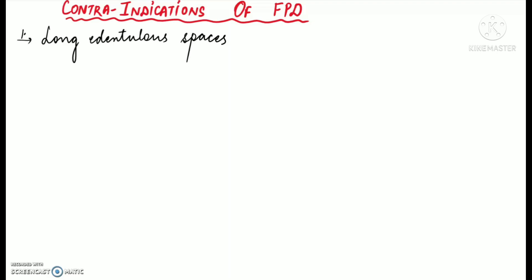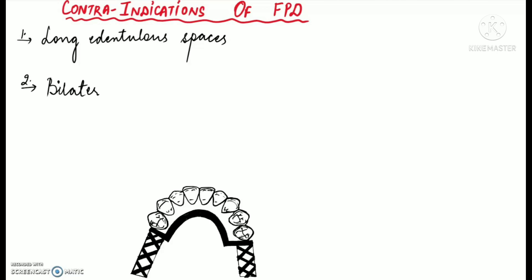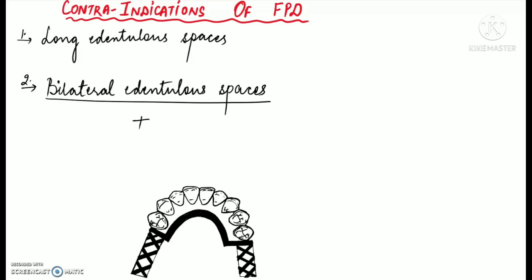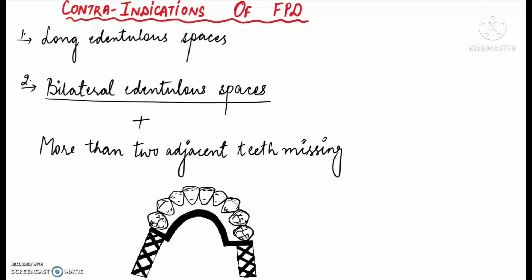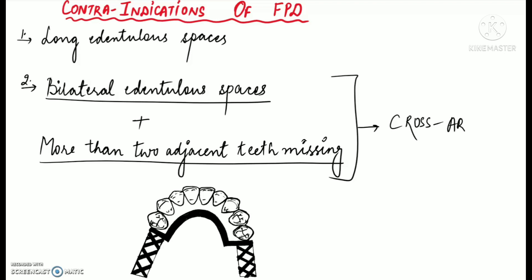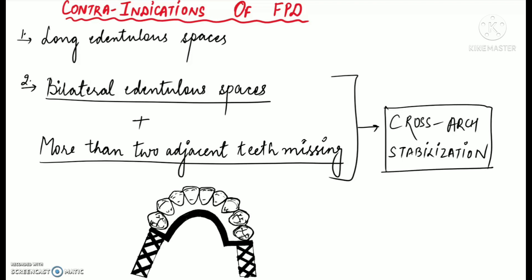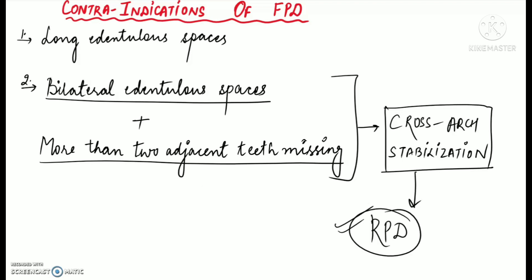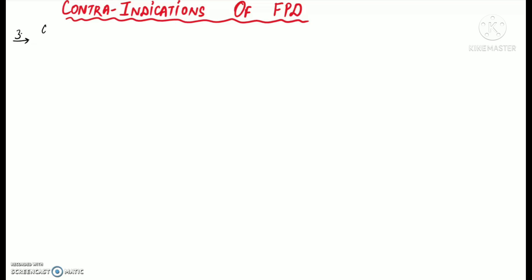Fixed partial dentures are generally avoided if long edentulous spaces are present, or when bilateral edentulous spaces are present along with more than two adjacent teeth missing on either side of the arch. In such cases we require cross-arch stabilization, which can be provided only by a removable partial denture, so RPD is preferred.